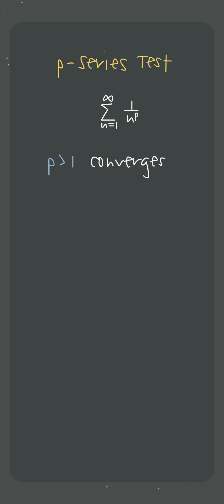For this exact kind of series, if p is greater than 1, then the series will converge. And if p is less than or equal to 1, then the series will diverge.